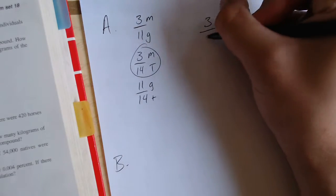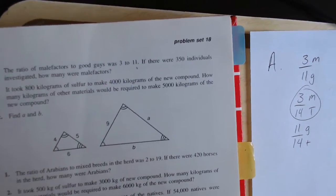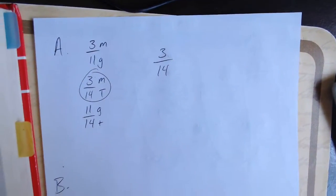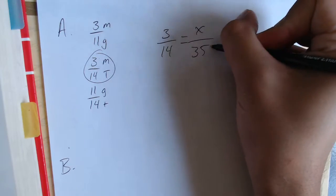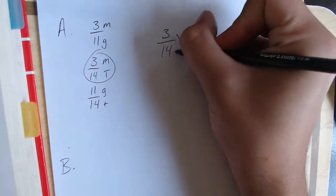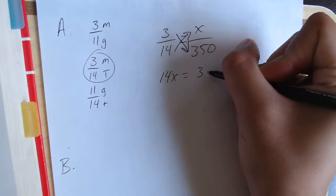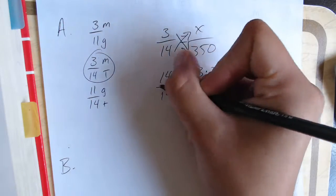So we take 3 to 14, and then we're going to plug in our number 350. 350 represents the total. So 3 over 14 is equal to x over 350. From here, we cross-multiply to solve. This helps us rewrite our equation as 14x equals 3 times 350. Divide each side by 14.